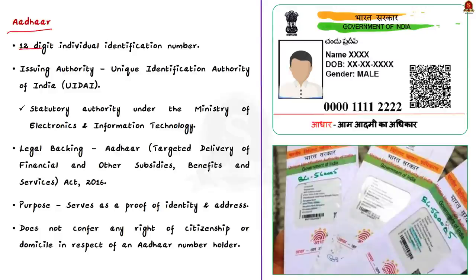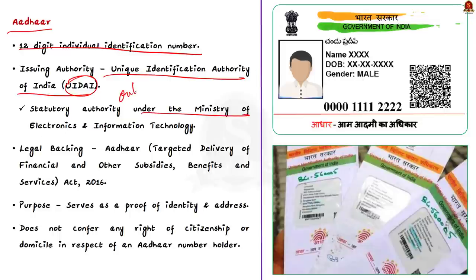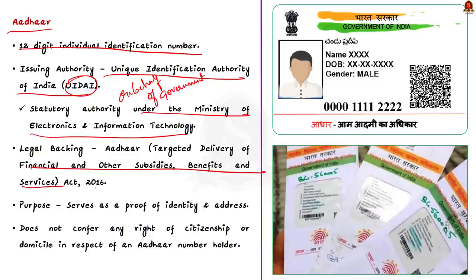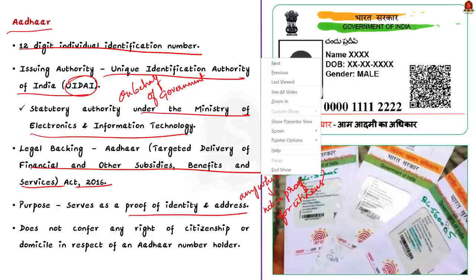Aadhaar is a 12-digit individual identification number issued by UIDAI — the Unique Identification Authority of India — on behalf of the Government of India. UIDAI is a statutory authority established under the Aadhaar Act of 2016, which stands for the Aadhaar (Targeted Delivery of Financial and Other Subsidies, Benefits and Services) Act 2016. It functions under the Ministry of Electronics and Information Technology. Aadhaar serves as proof of identity and address anywhere in India, but does not confer any right of citizenship or domicile.